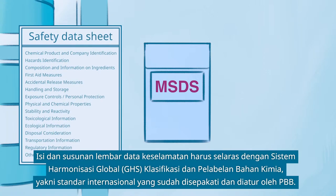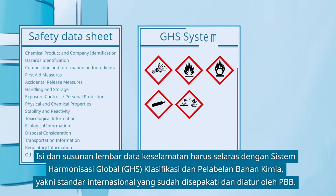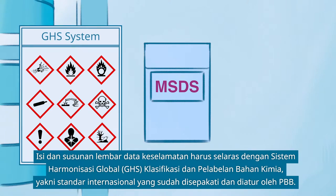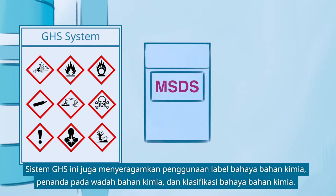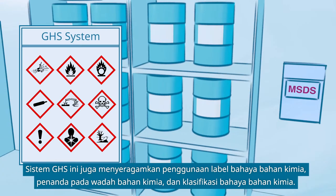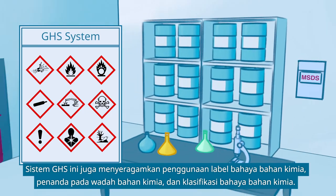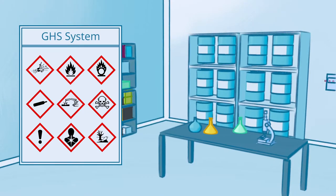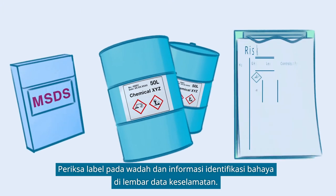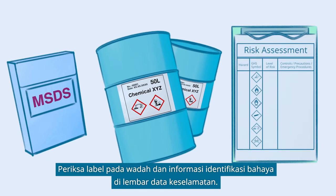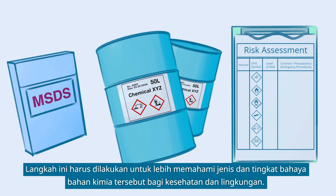The content and structure of safety data sheets should be in line with the globally harmonized system of classification and labeling of chemicals, which is an internationally agreed-upon standard managed by the United Nations. The GHS system also harmonizes the use of chemical hazard labels, markings for chemical containers, and the chemical hazard classification. Check the labels on the container and the information on hazard identification in the safety data sheet, in order to better understand the type and severity of hazards to health and environment that the chemical may pose.